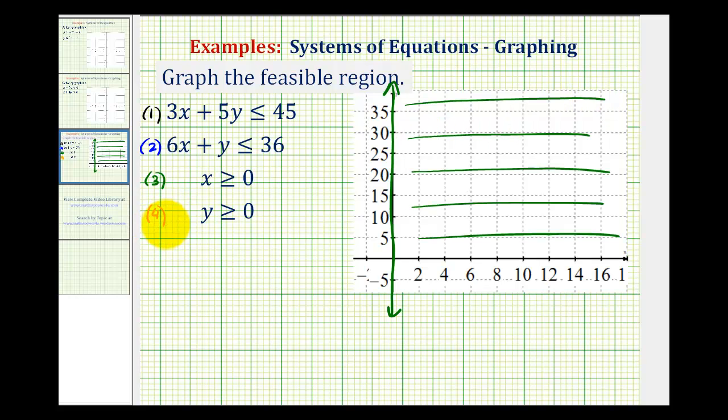For inequality four, we have y is greater than or equal to zero. So the border line would be y equals zero and it would be solid. So we have a horizontal line passing through the y-axis at zero, which would actually be the x-axis. And it says y is greater than or equal to zero, so we would shade above the horizontal line, this region here.